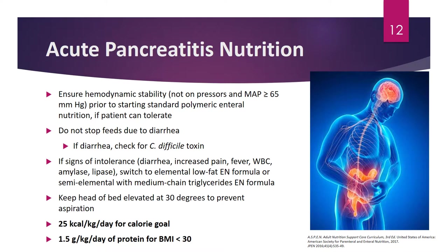The calorie goal for pancreatitis is 25 kcal per kg per day, or 25 to 30 kcal per kg per day in the ICU. For acute pancreatitis with BMI less than 30, patients need at least 1.5 grams per kg per day of protein. In the ICU, the protein range is typically 1.2 to 2 grams per kg, but for acute pancreatitis this should be adjusted to 1.5 to 2 grams per kg per day.